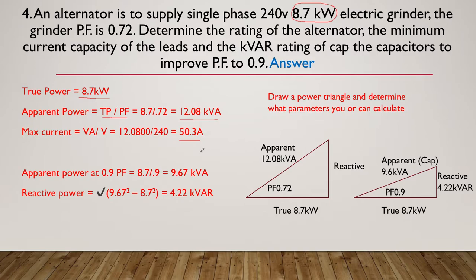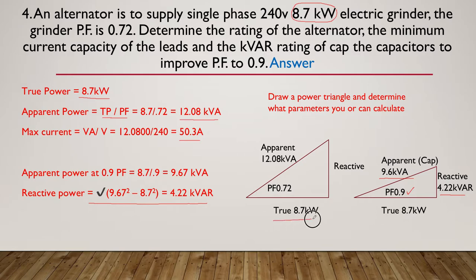Now we improve our power factor — that gives us our first triangle. The apparent power at 0.9 power factor drops to 9.6 kVA. We've added our capacitor and the power factor is now 0.9. Using Pythagoras, we can work out the reactive component, now at 4.22 kVAR. Notice true power hasn't changed, but as the power factor improved from 0.72 to 0.9, the triangle became shallower, the hypotenuse shorter, and apparent power smaller.